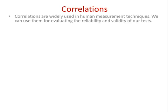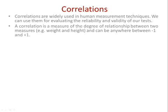Correlations are what we're going to cover today. They are widely used for all sorts of techniques in human measurement — specifically things like determining reliability and the validity of tests. A correlation is simply a measure of relationship: how strongly related are two variables.